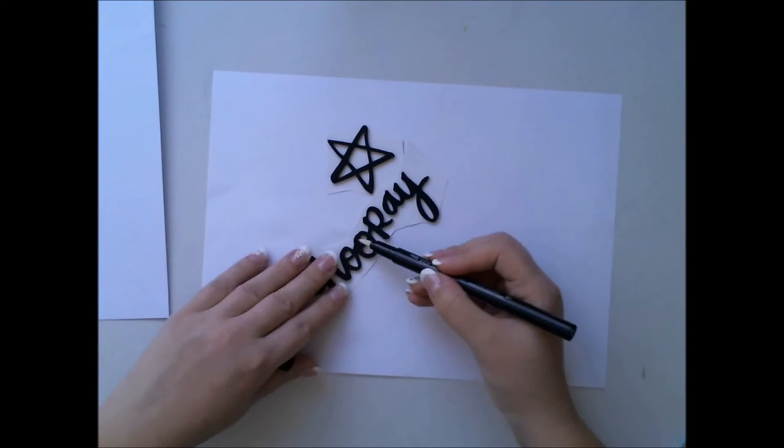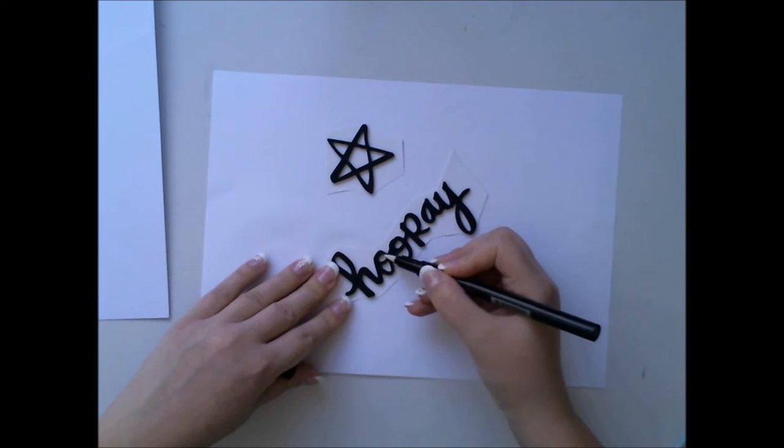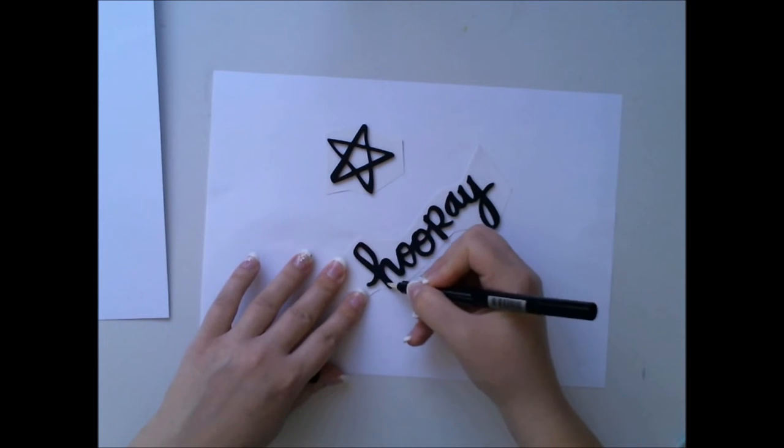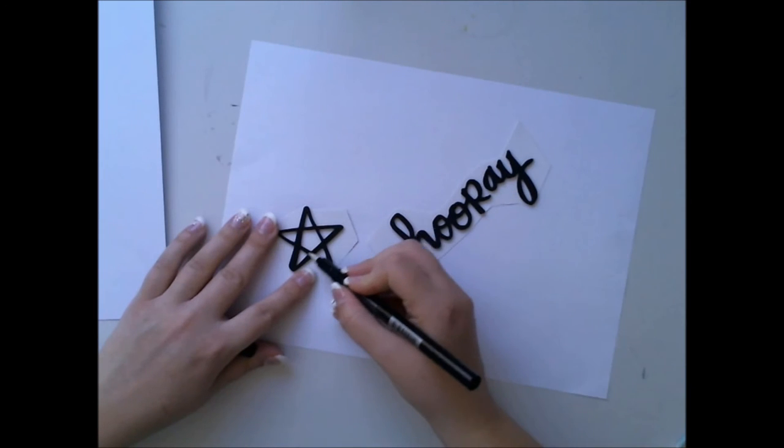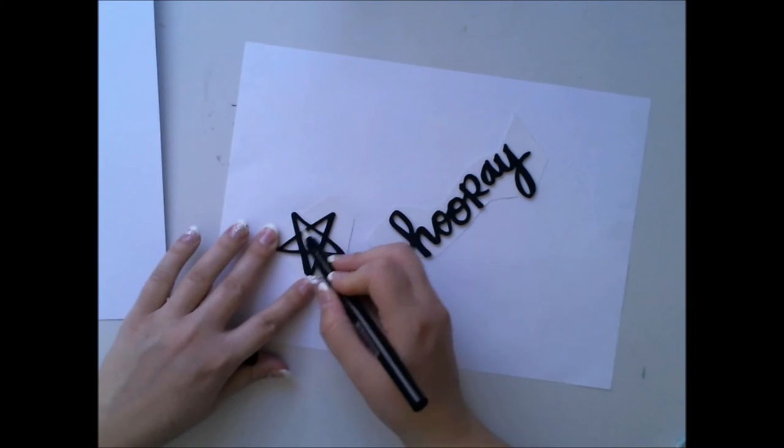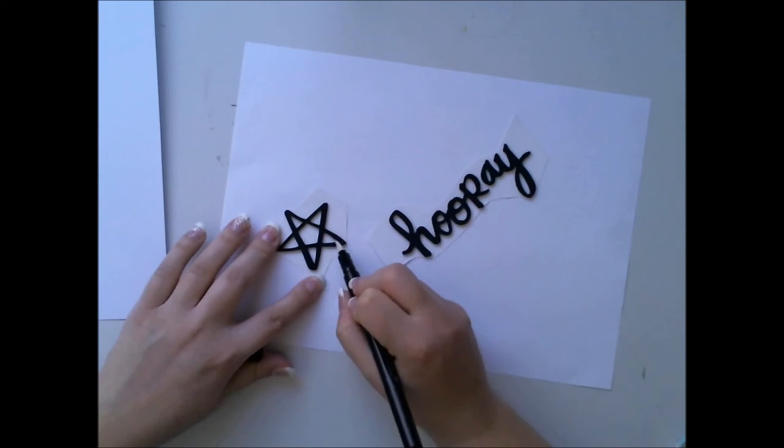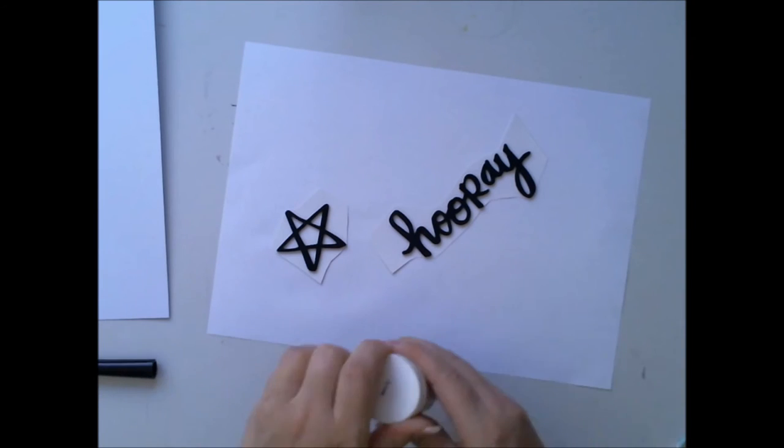It's always such a happy moment to see sunshine. So I'm using a Versamark pen to add some Versamark ink to this word and the star. You can use the ink pad also but this is a much neater way to add the Versamark ink.